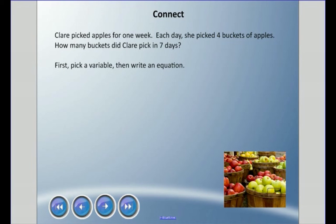Claire picked apples for one week. Each day she picked four buckets of apples. How many buckets did Claire pick in seven days? Again, we're gonna pick a variable and then write an equation. Because it's buckets, not apples, I'm gonna use B in this situation. Each day she picked four buckets of apples, and it's about one week. A week is seven days. So we're gonna multiply this to find out what B is. Knowing our multiplication facts, four times seven equals 28. So in the one week, Claire picked 28 buckets.